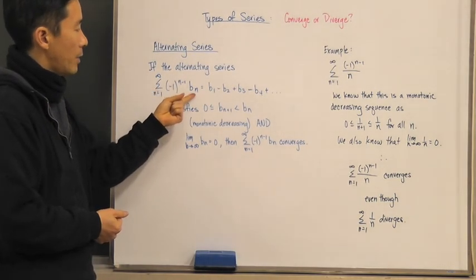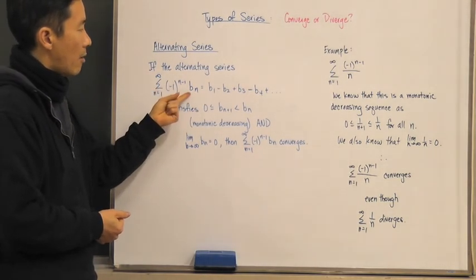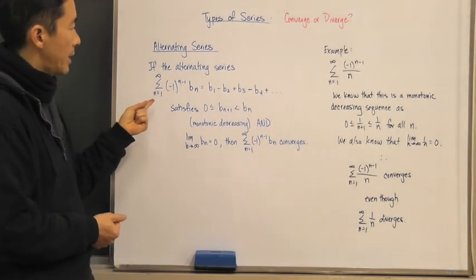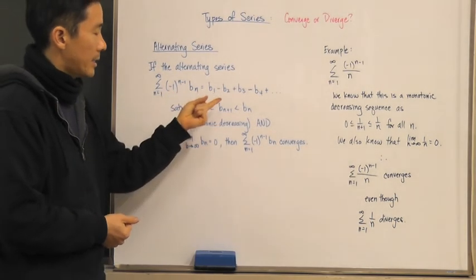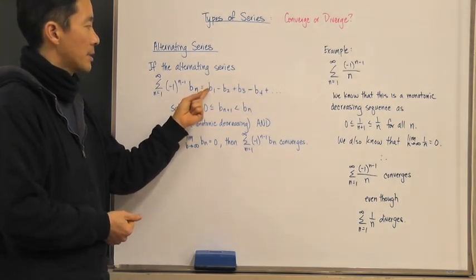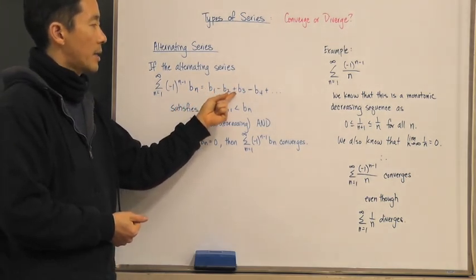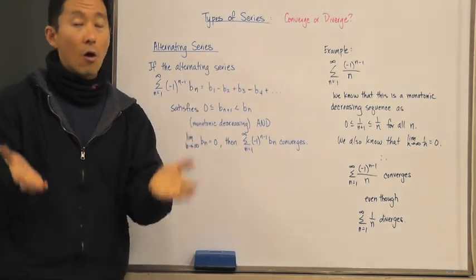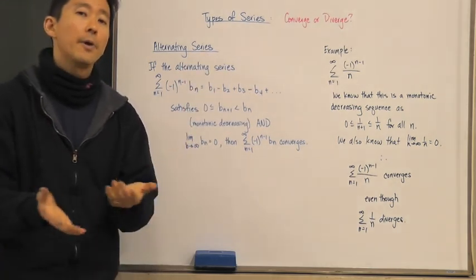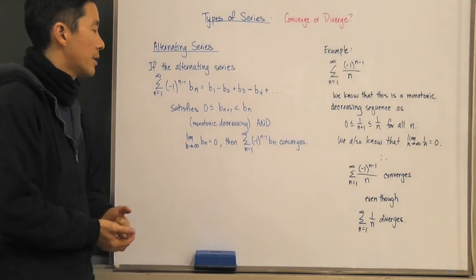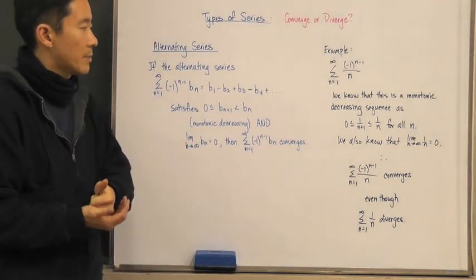If we go ahead and expand the series, notice that the terms are positive, then negative, then positive, then negative — and it keeps alternating that way, which is why we call this an alternating series.